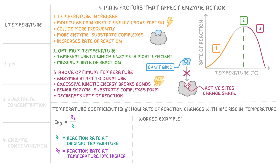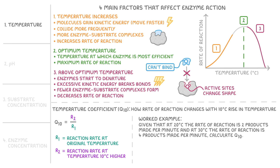Let's do a quick worked example to show how this works. Given that at 20 degrees the rate of reaction is 2 products made per minute, and at 30 degrees the rate of reaction is 4 products made per minute, calculate Q10. We grab our equation and plug in our values, so we get Q10 equals 4 divided by 2. This obviously equals 2, and this tells us that the reaction rate is 2 times faster after the 10 degree increase in temperature.